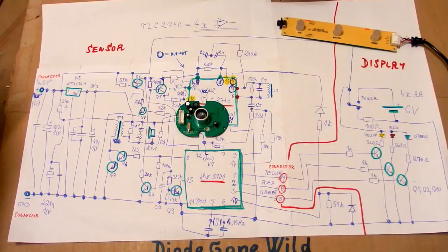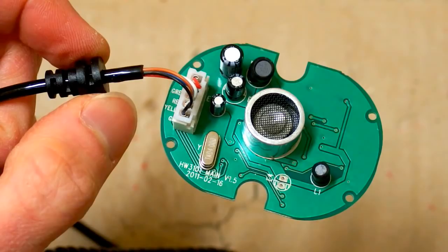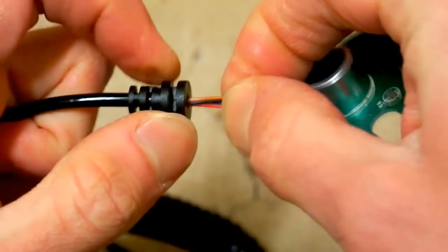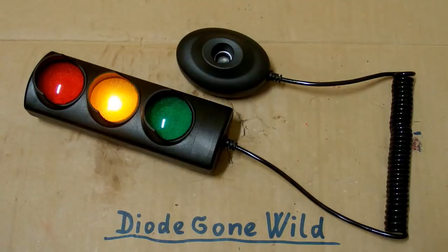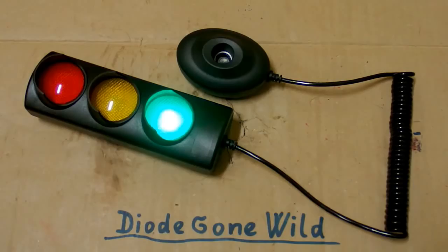The grommet is loose on the cable. That's not very nice. Let's put a super glue on it. And it's all back together. So this is DiodeGone Wild and see you in my next videos.